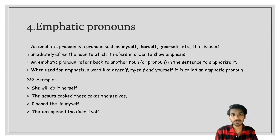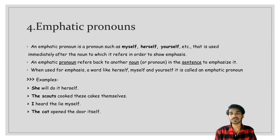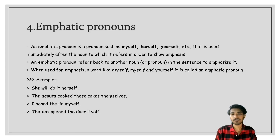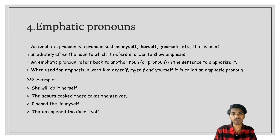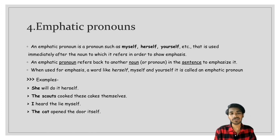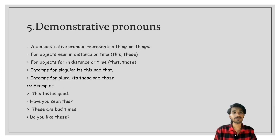The next type is empathic pronoun. An empathic pronoun is a pronoun such as myself, herself, and yourself that is used immediately after a noun to which it refers, in order to show emphasis. An empathic pronoun refers to another noun or pronoun in a sentence to emphasize it. Examples: 'She will do it herself' — 'herself' is the empathic pronoun. 'The scouts cooked these cookies themselves.' 'I heard the lie myself.' 'The cat opened the door itself.'